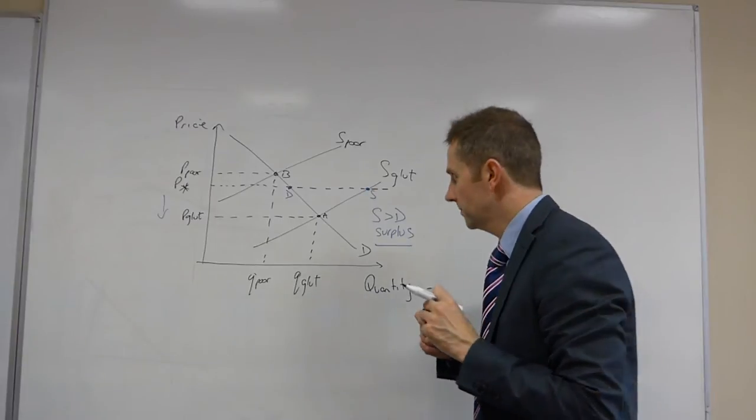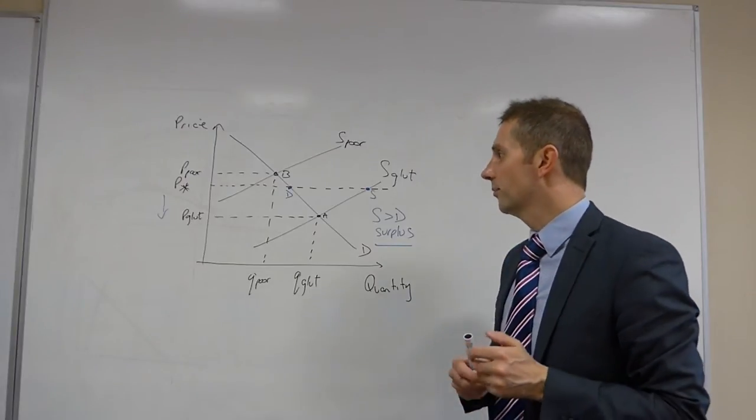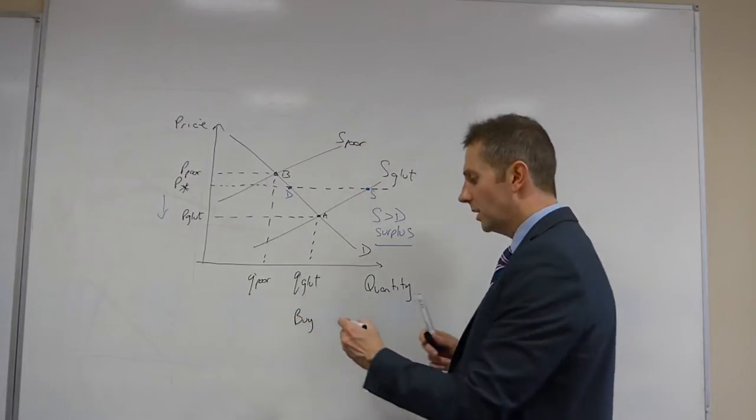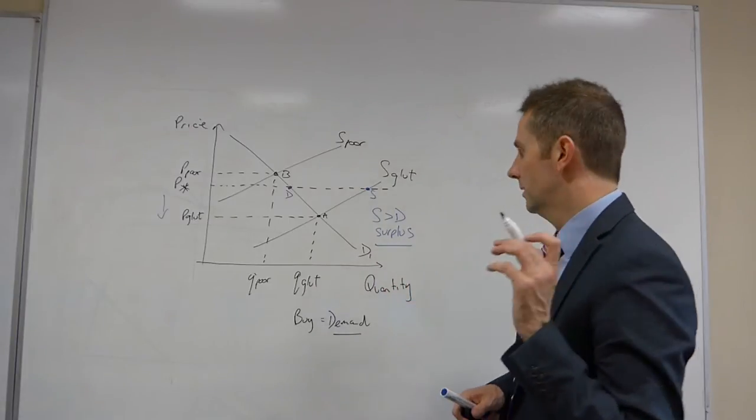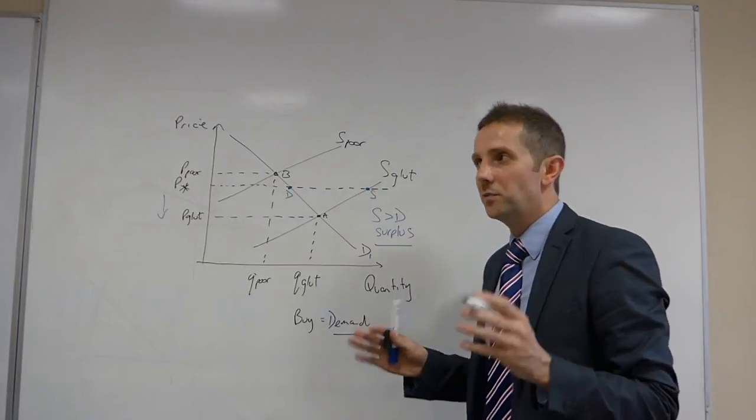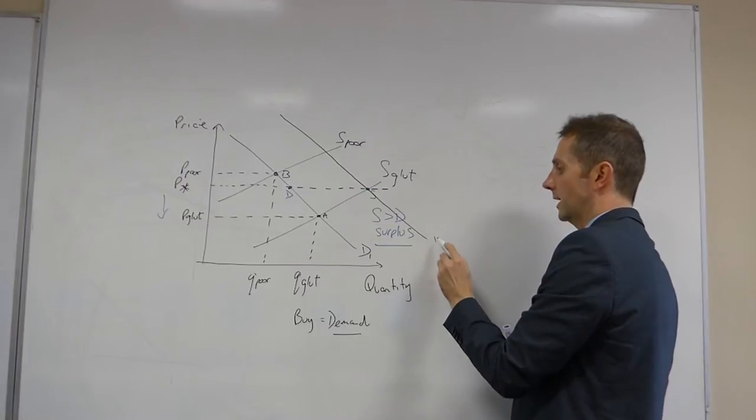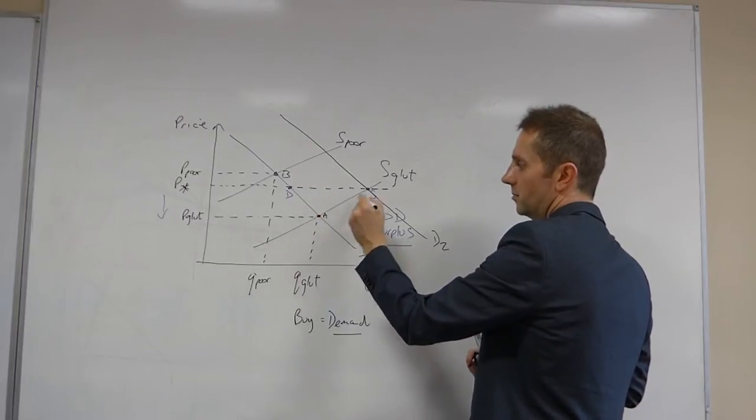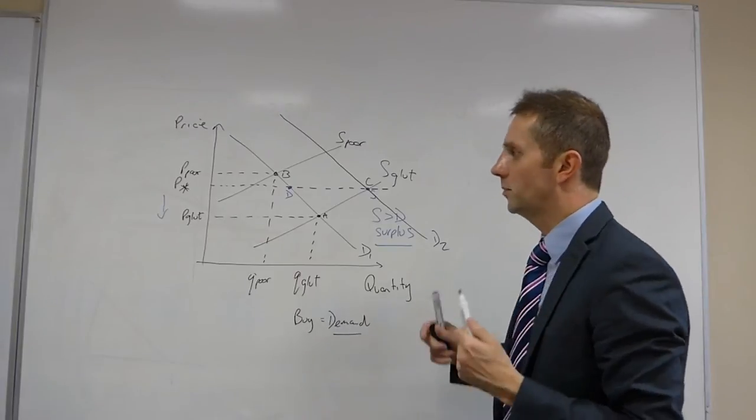Under a buffer stock system, any surplus produce is bought up, guaranteed to be bought up, in fact, by the government. And when you buy something, what is it that you're actually doing? You are demanding a particular good. And so, as a consequence of this, the fact that the government will buy up this surplus, the demand curve is shifting to the right. So, in order to restore the equilibrium back to P star, the demand curve would have to shift outwards to something like that, D2. And when we shift the demand, we're moving from this equilibrium back up here to point C, and we have restored the equilibrium price back to P star once again.